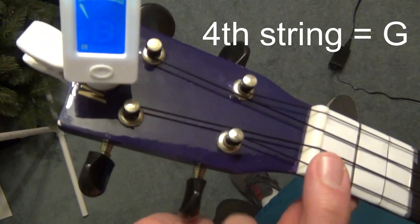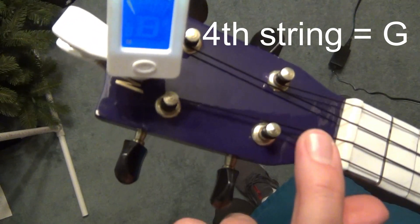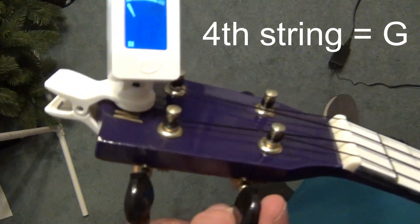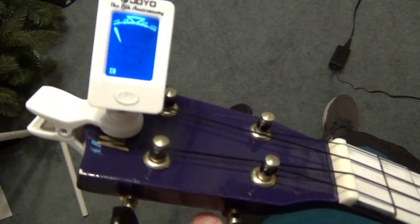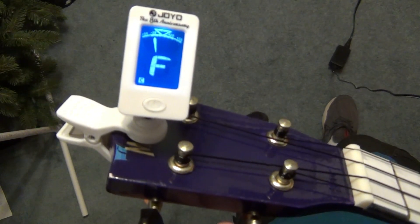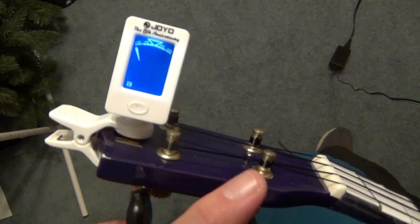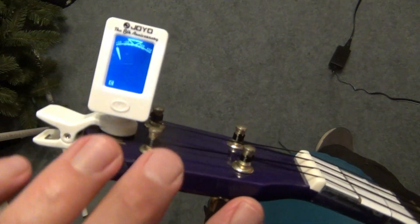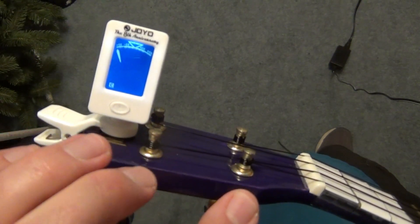So we're going to tune the fourth string which is a G. Follow that to the right tuner. Go ahead and pluck the string and it says F, so that is flat. So that means I have to turn the tuning key counterclockwise to tighten it.